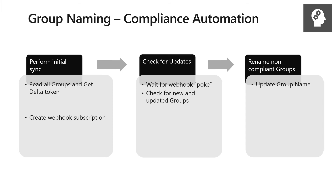Now let's imagine the same company has special group naming rules and wants to make sure all their groups stay in compliance with naming conventions across the entire organization. Delta Query can be helpful here, and you can also use webhooks to optimize this — webhooks and Delta Query are generally used better together. To start, you can read all groups in the tenant and get a Delta Token. This lets you scan all existing groups to make sure they're compliant, and then get a Delta Token to come back later and learn what's changed in the set of groups in the tenant.